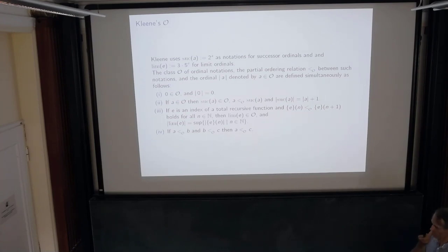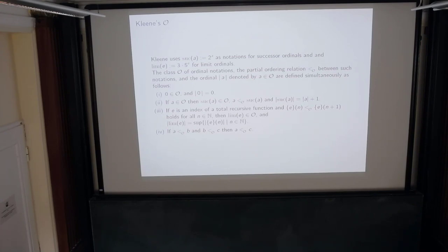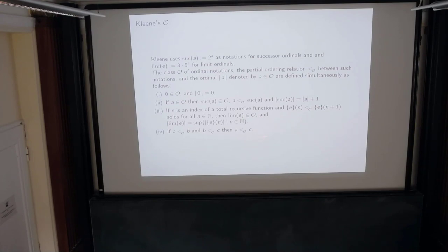To briefly recall Kleene's O: it's an inductive definition. For a successor of something, it's just the number 2^a. For limits, he uses the LIM_e notation. Then we have an ordering on O — it's an inductive definition. In clause three: if e is an index of a total recursive function, and e(n) is always defined, lands in O, and yields an increasing sequence, then we create a new object in O, called LIM_e. That's the inductive definition.